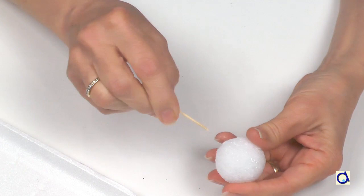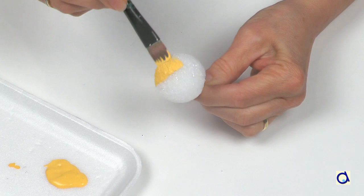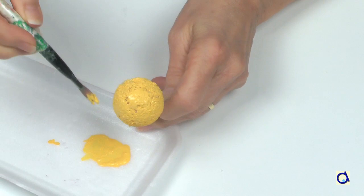While the glue dries, take a styrofoam ball of about 1.5 inches in diameter to make the head of the finger puppet. To avoid getting your fingers dirty, put a toothpick into the styrofoam ball and hold the toothpick while painting the ball yellow. If necessary, add a second coat of paint. Let the styrofoam ball dry completely.